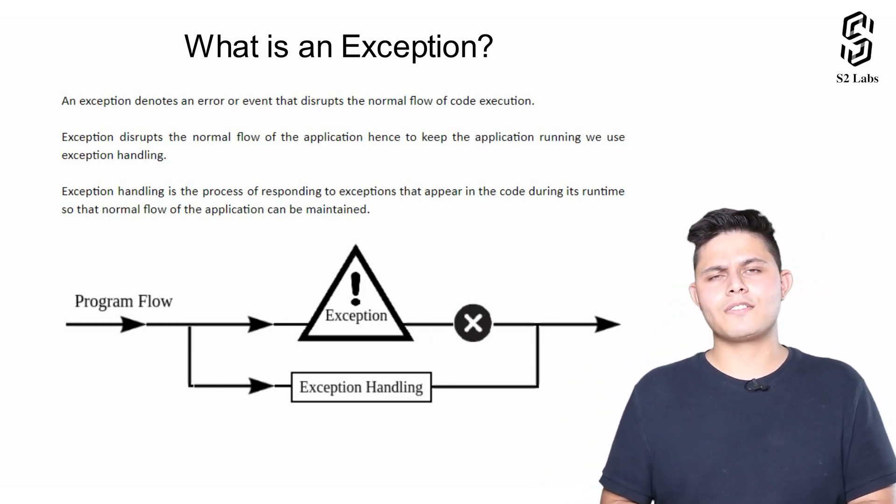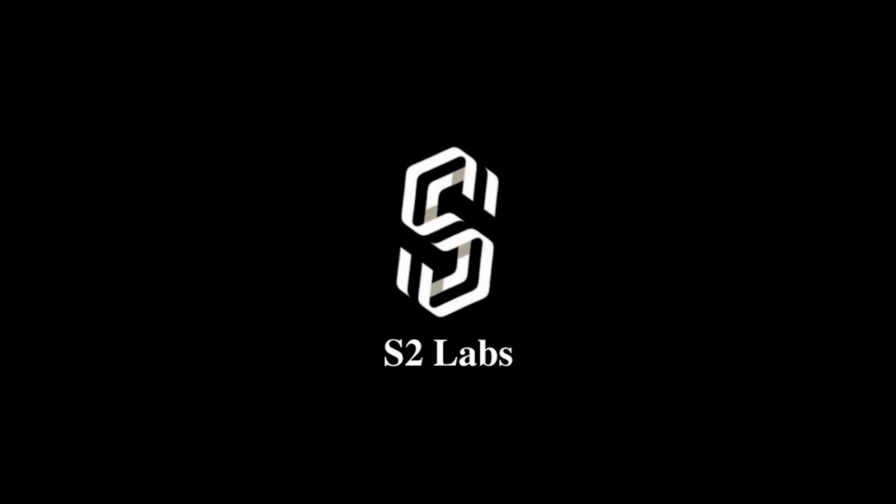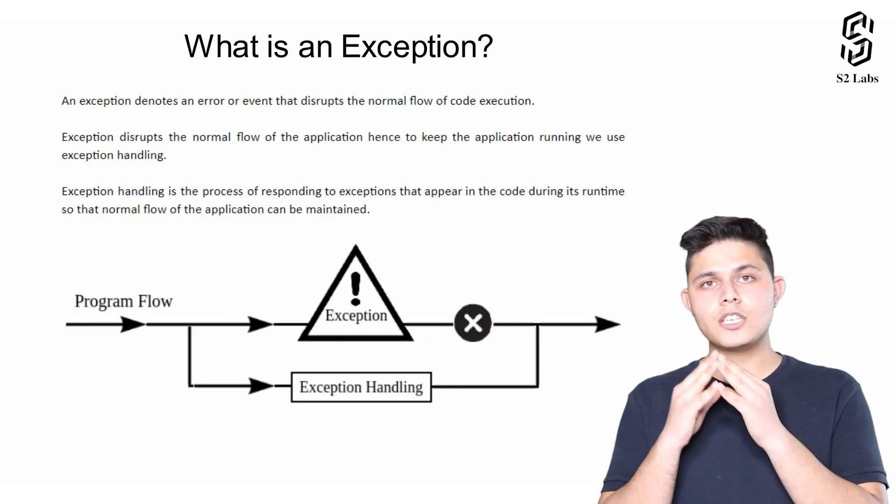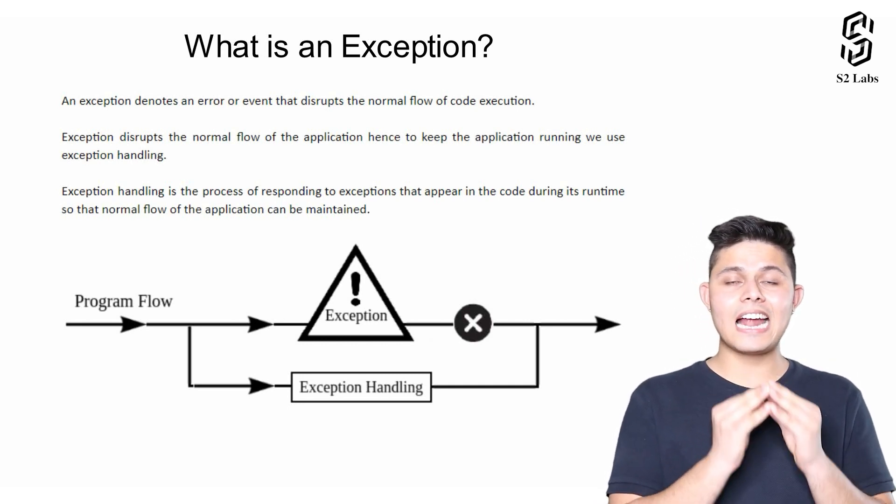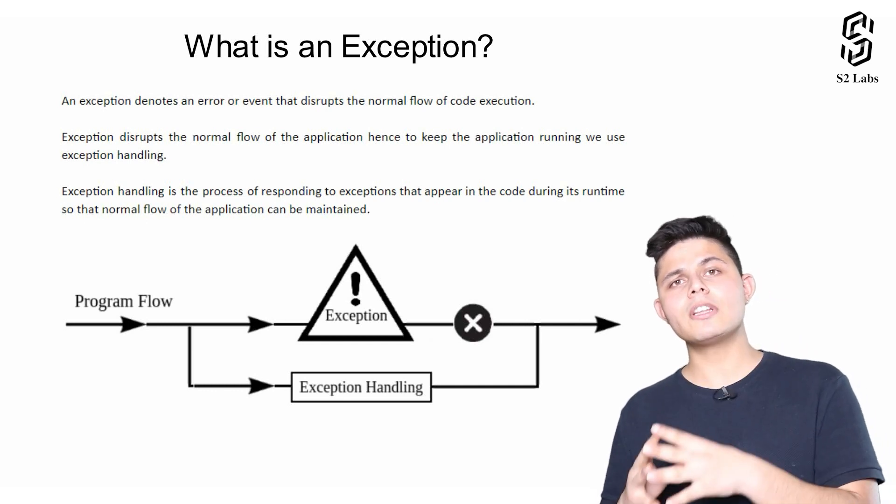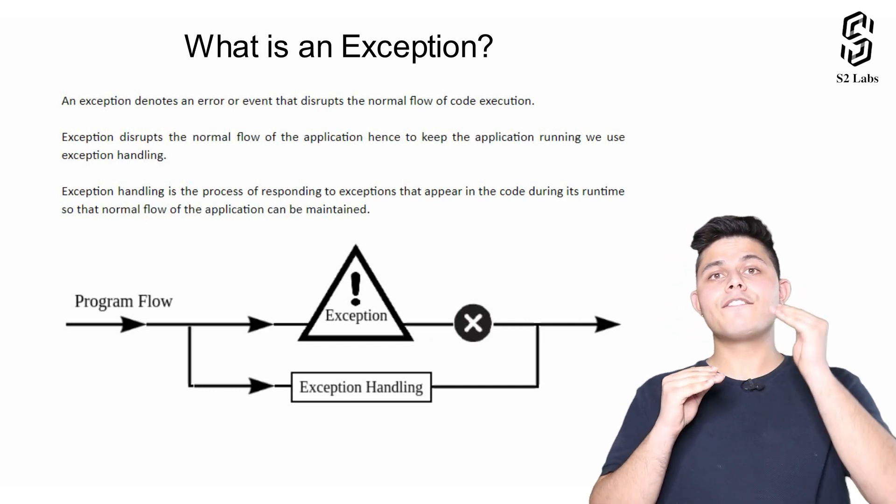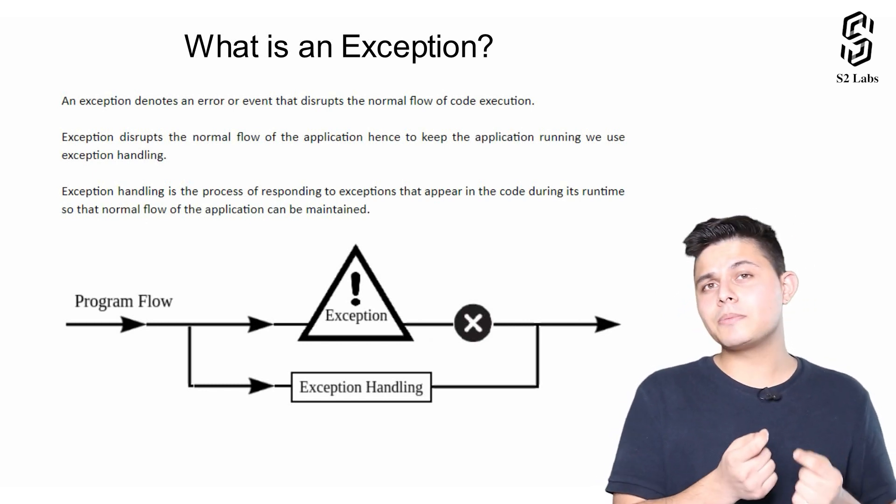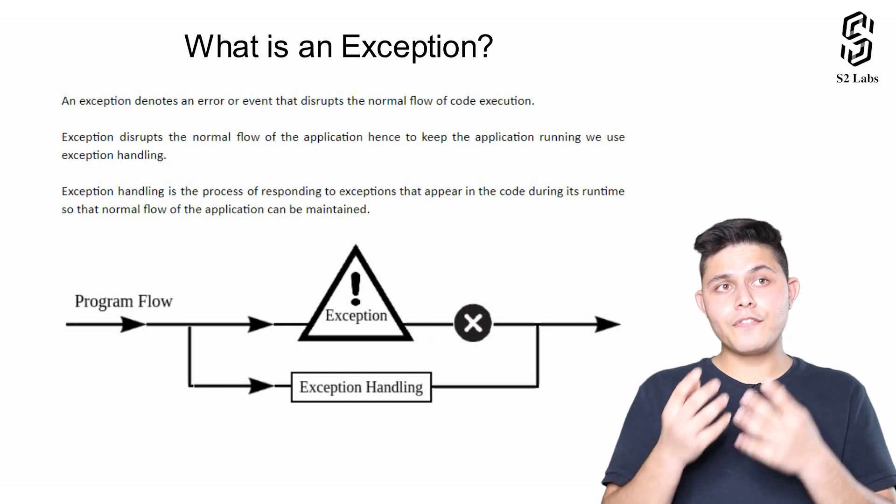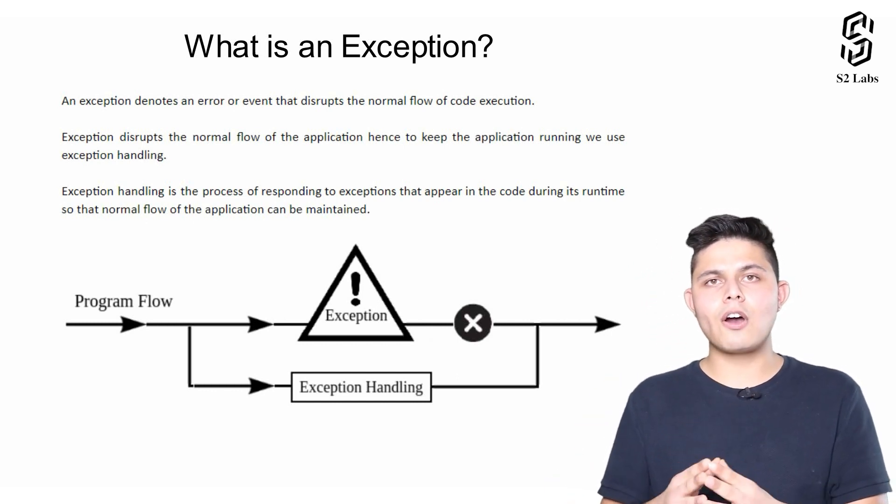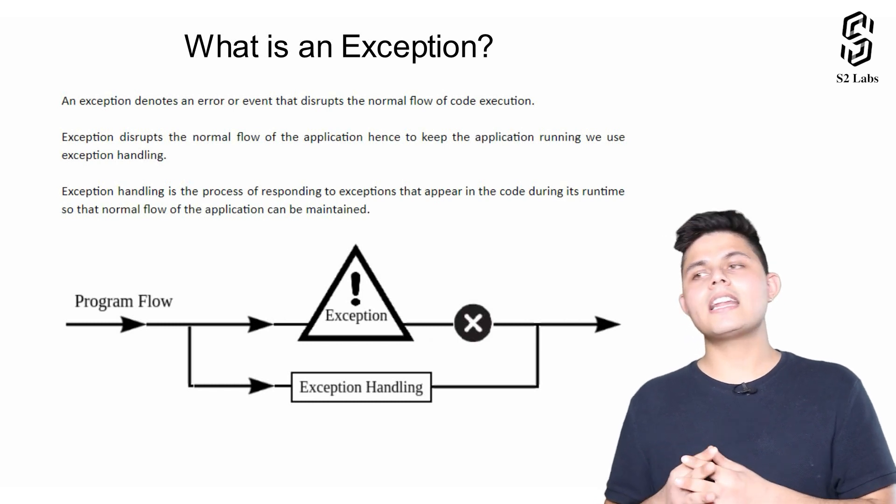As written here, an exception denotes an error which occurs or gets generated at runtime. Runtime means whenever we're executing a particular program and while executing, if there's a sudden error that happens, the program execution gets halted. That's what we call an exception.